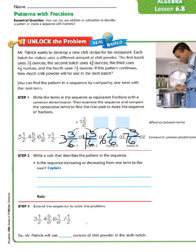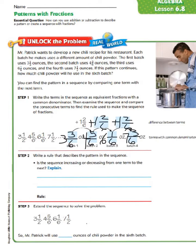Now we examine the sequence and compare consecutive terms to find the rule. We see that between 3 and 3/6 and 4 and 5/6, we have added 1 and 2/6. If we take 4 and 5/6 and add 1 and 2/6, it does give us 6 and 1/6. So we see a pattern of adding 1 and 2/6 to each of our consecutive terms.